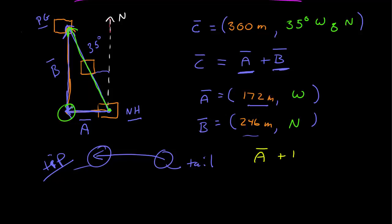Note that vector addition is commutative. That means that adding the vectors A plus B gives you the same result as adding the vectors B plus A.